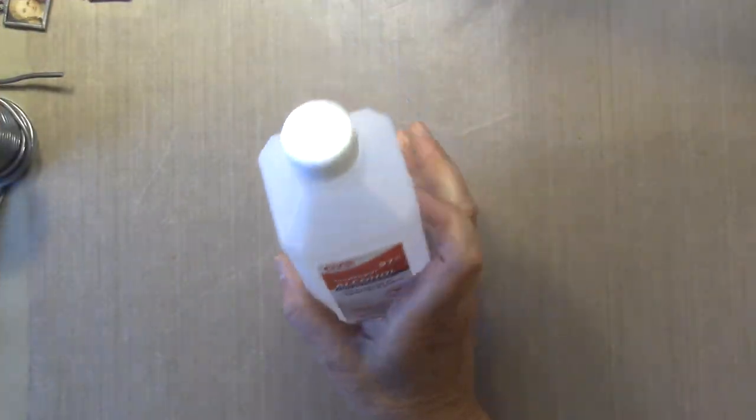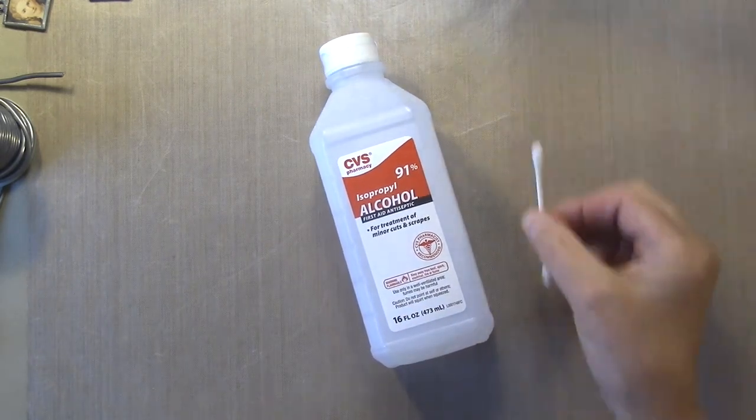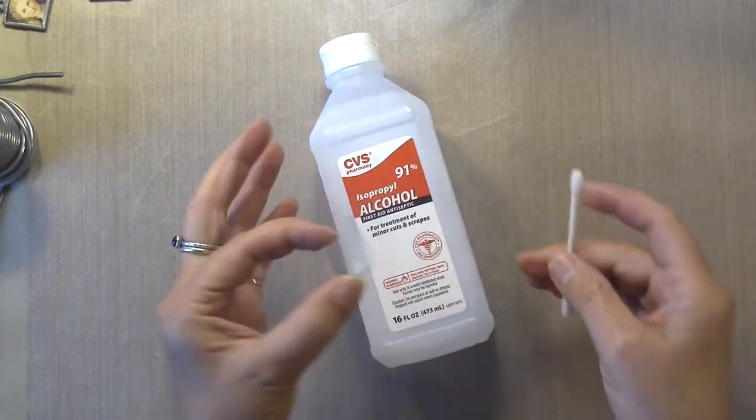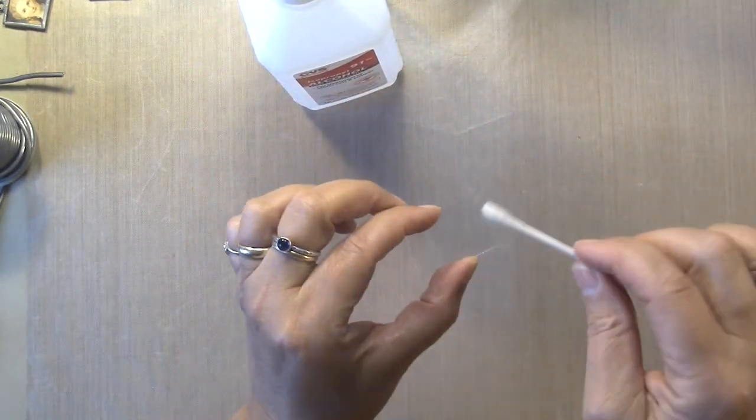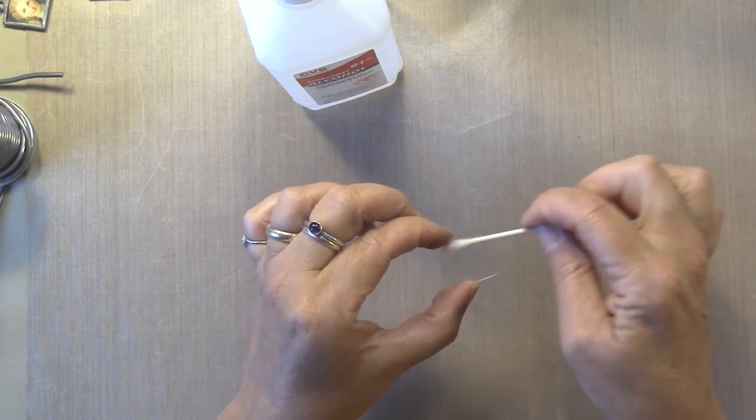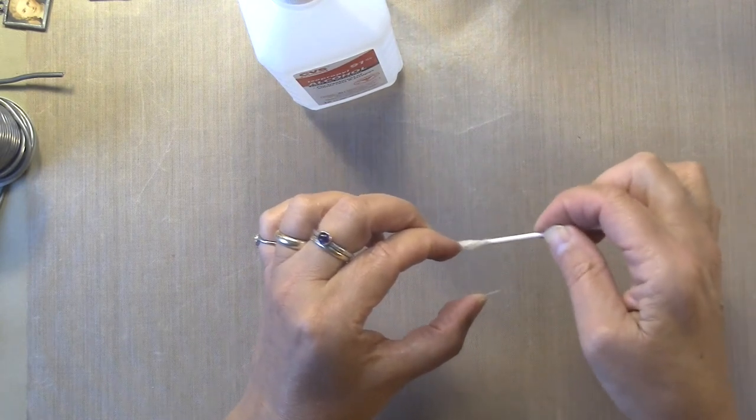Alright, the next step is we're going to use this alcohol and a Q-tip and we're going to clean a little piece of glass. I've already got some alcohol on my Q-tip and you're just going to wipe it clean and then dry it with a piece of paper towel and make sure that there's no little fuzzies on it.